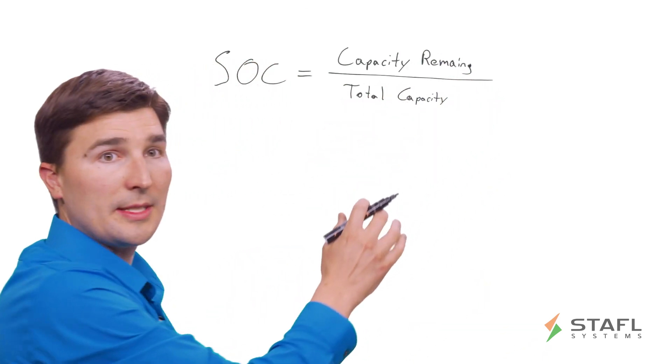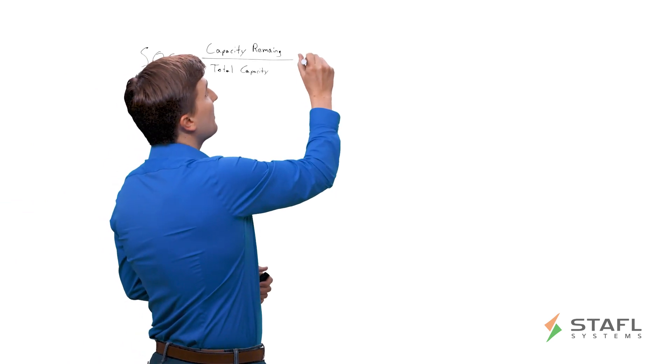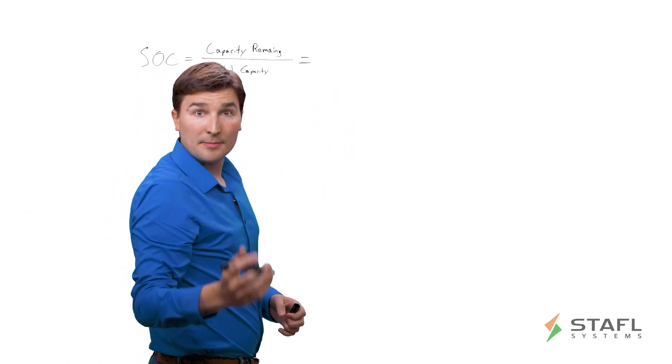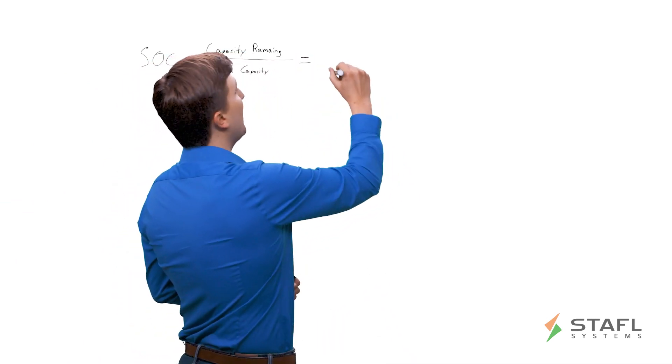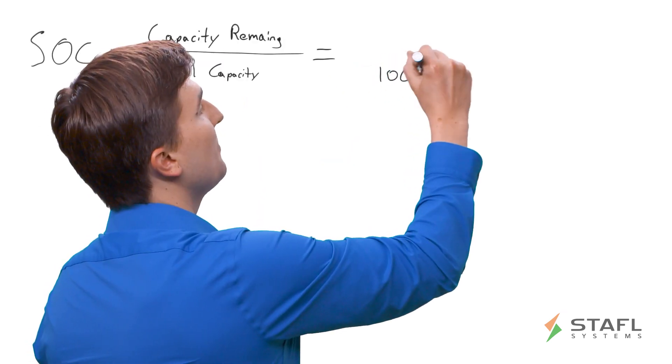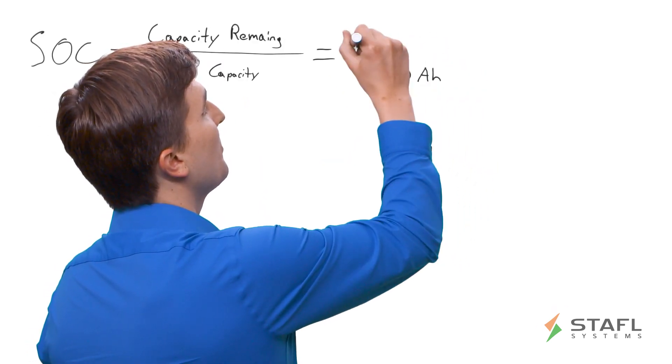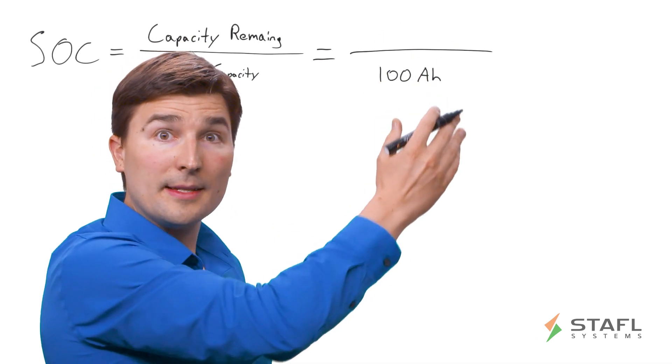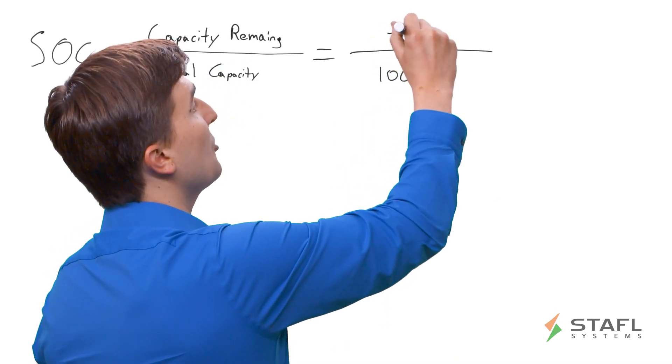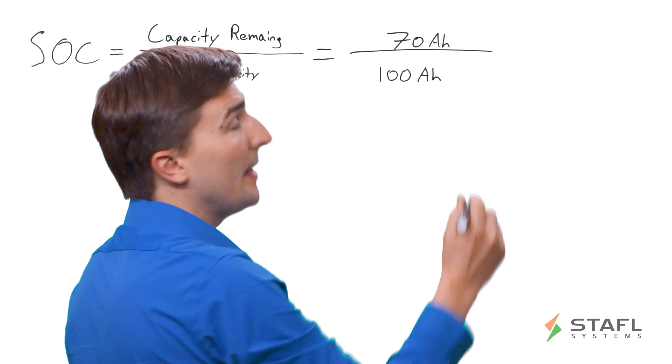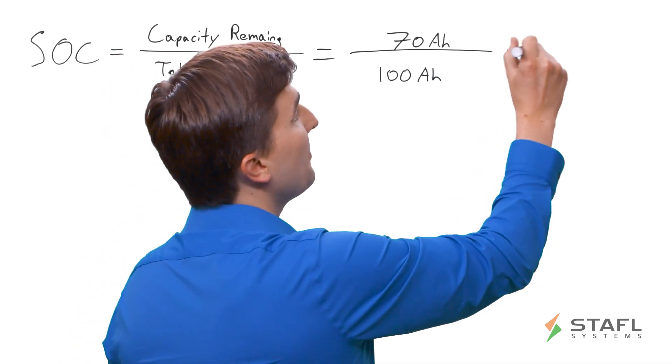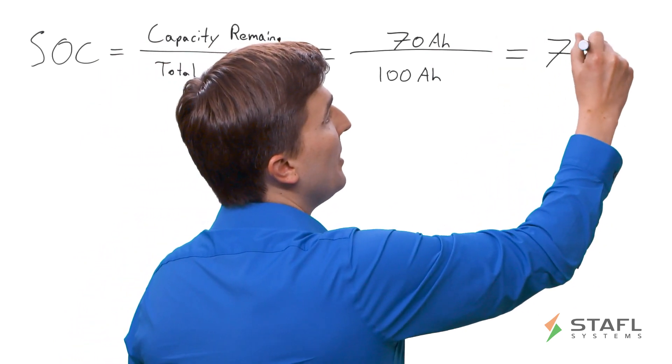Let's give an example. If we had a battery pack that was, say, a 100 amp hour battery pack total capacity, and we had 70 amp hours left to discharge, that would give us a state of charge of 70%.